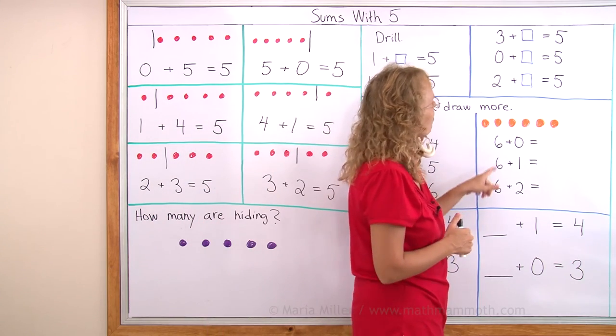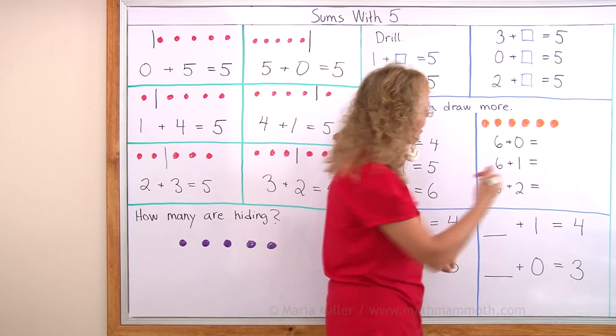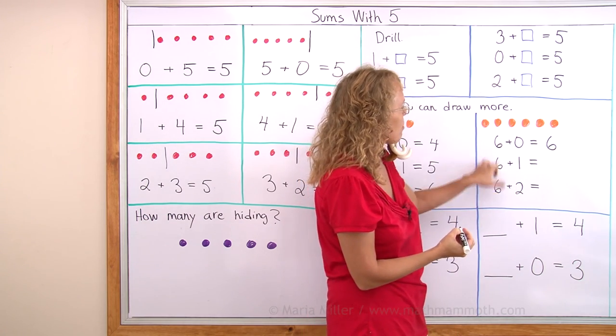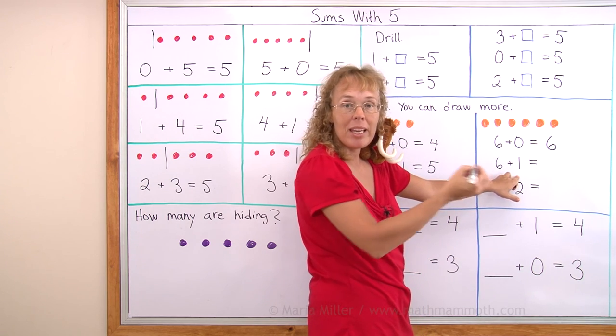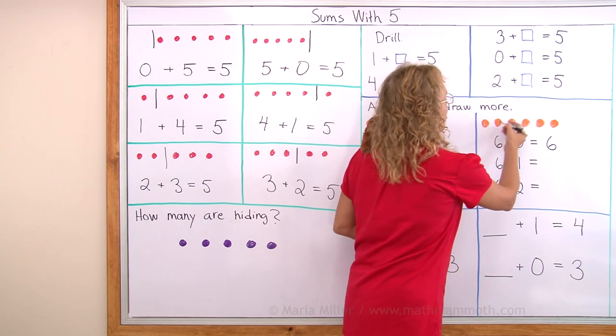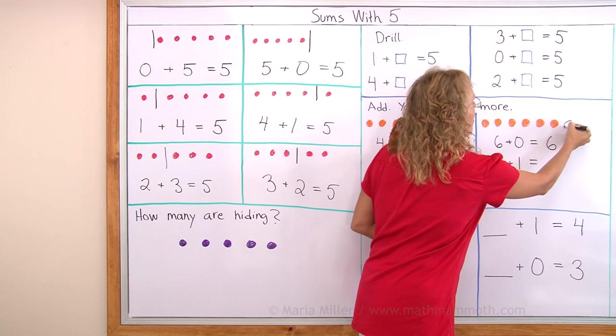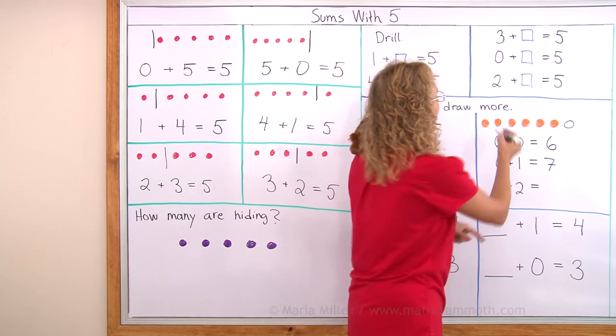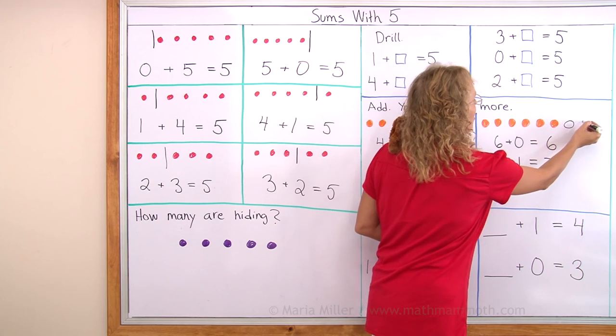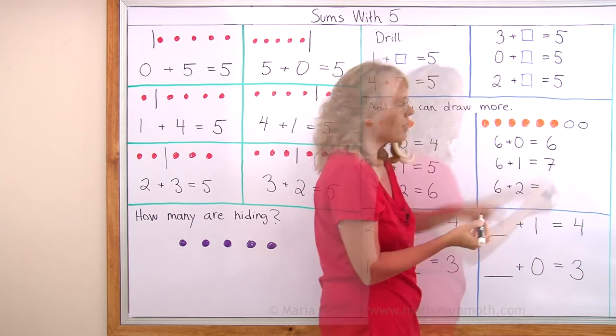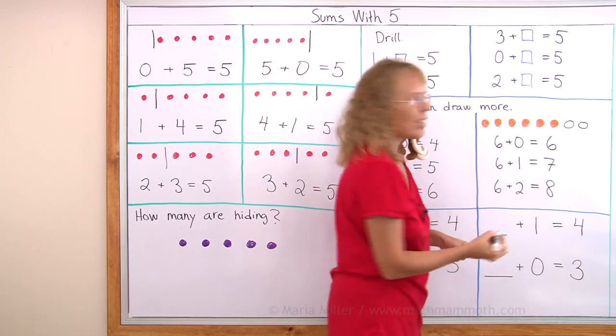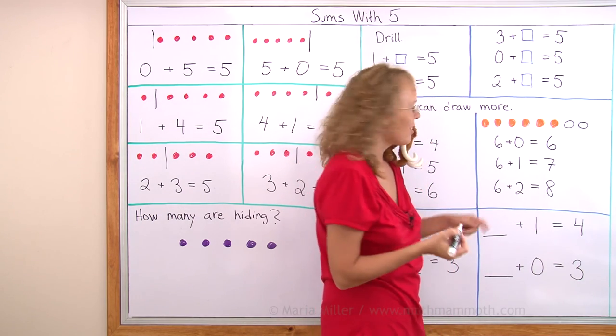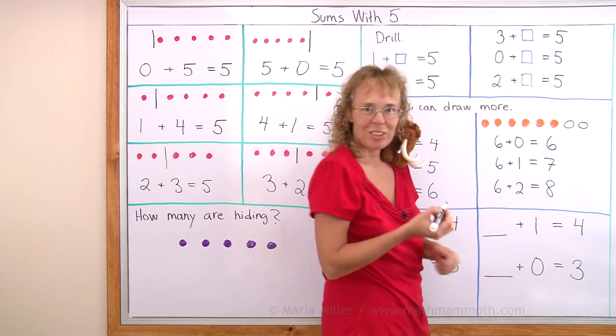Let's see here. Six apricots plus zero more. Well, that should make six, right? We don't add any more. Six apricots and one more will make how many? One, two, three, four, five, six and seven, right? Five, six and I add two more. I already have six and one more and two more. Then how many do I have? Eight. Yes. Look at the answers again. Six, seven, eight. There's a pattern. And zero, one, two. There's a pattern.